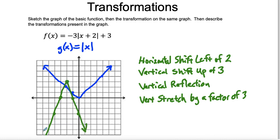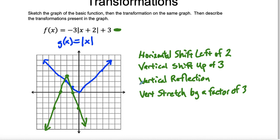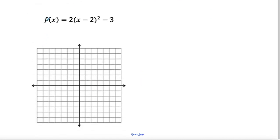So I have my transformation in green and my original in blue, and I've listed all of my transformations as well. Next problem — let's look at another one. In this case, we have a parent function that is x squared.